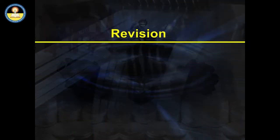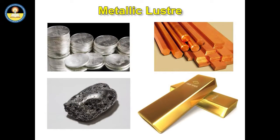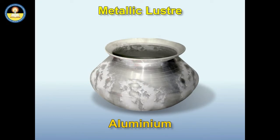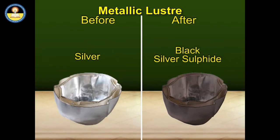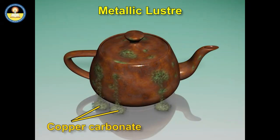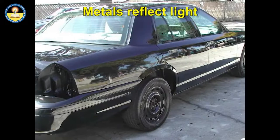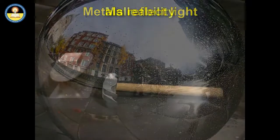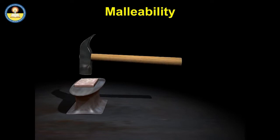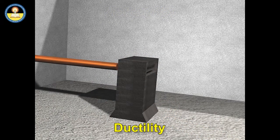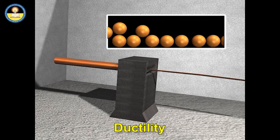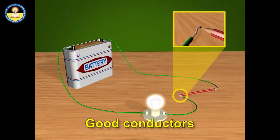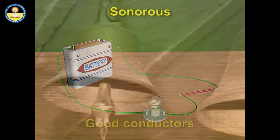Let us revise. Metallic luster is the ability of a metal to reflect the light falling on it. Metals lose luster if kept in the atmosphere due to the formation of oxide, sulphide, or carbonate layers on them. Metals reflect light at all angles and therefore can act as mirrors. Malleability helps achieve a desired shape by hammering. Metals can be drawn into thin wires by stretching — this process is called ductility. Most metals are good conductors of heat and electricity. Metals are sonorous.